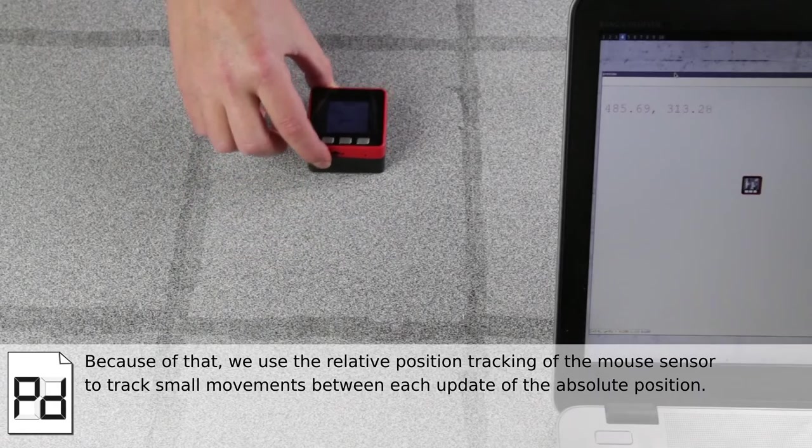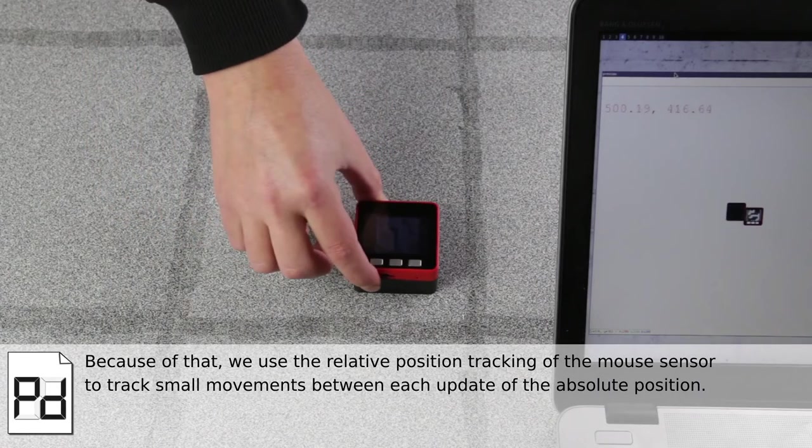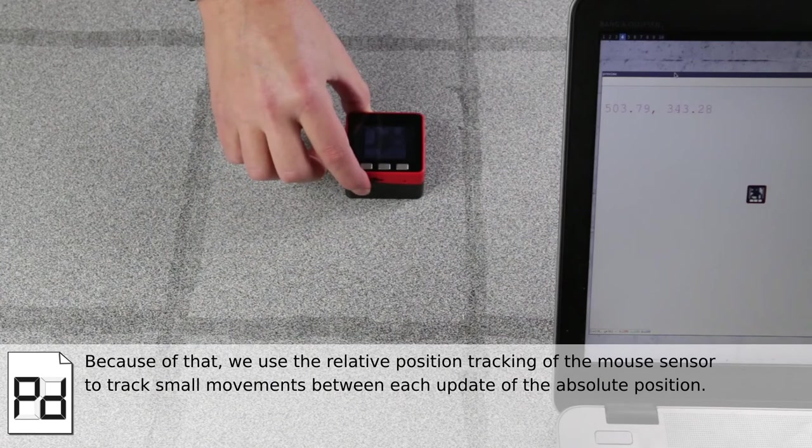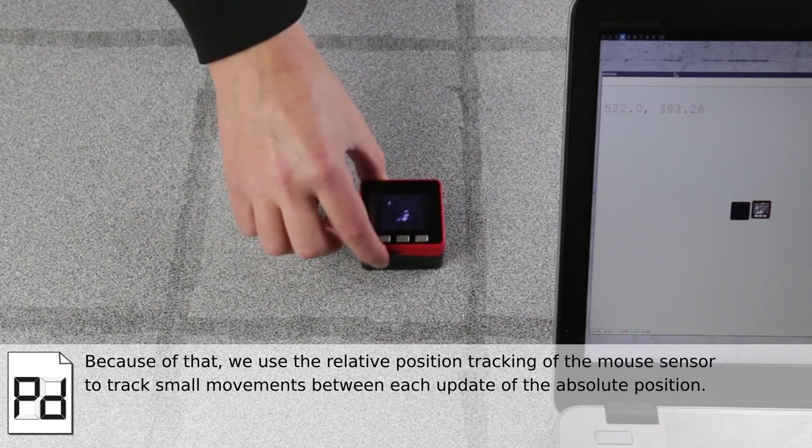Because of that, we use the relative position tracking of the mouse sensor to track small movements between each update of the absolute position.